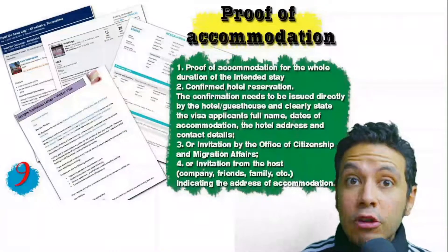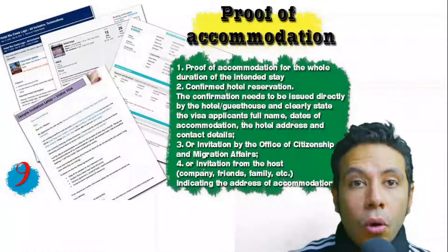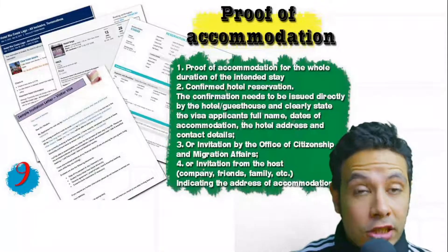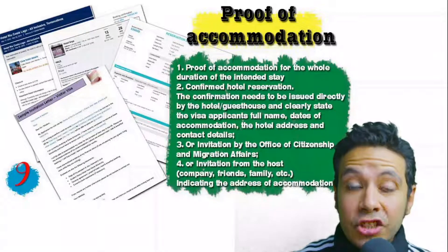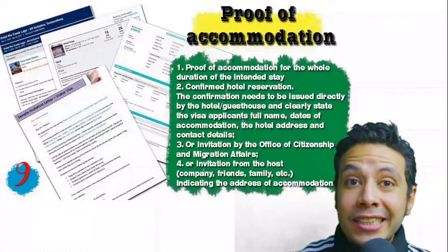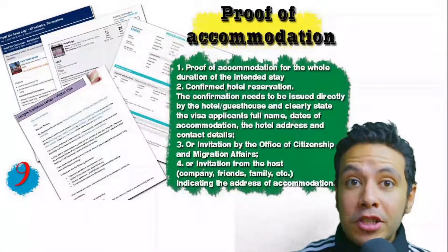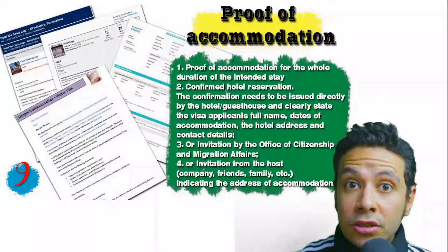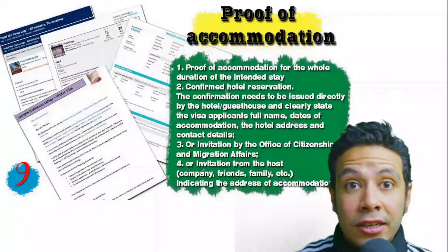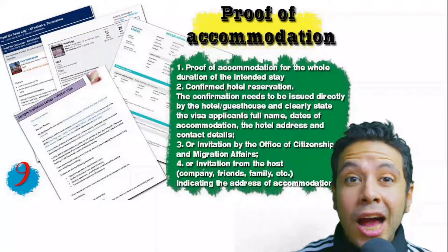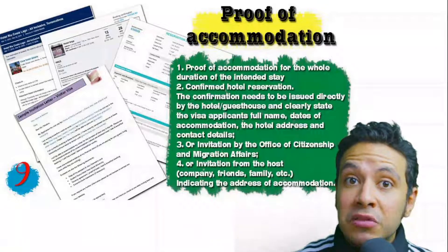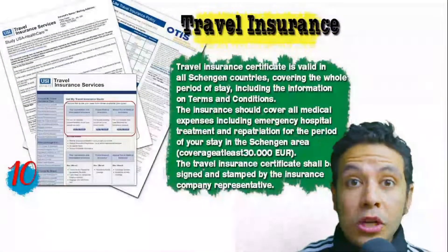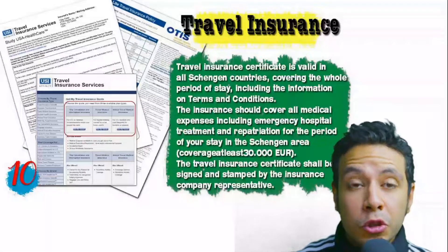You will also need to provide proof of accommodation. It could be a confirmed hotel reservation, an invitation from a host in that country, or an invitation from an organization you are visiting. For a hotel or hostel, an initial booking is acceptable, though in some minor cases a confirmed booking may be needed. The name, address, and contact number of the hotel must be mentioned. If you are invited by a person, the letter of invitation should be mailed directly to the embassy or submitted by you along with a copy of that person's passport.